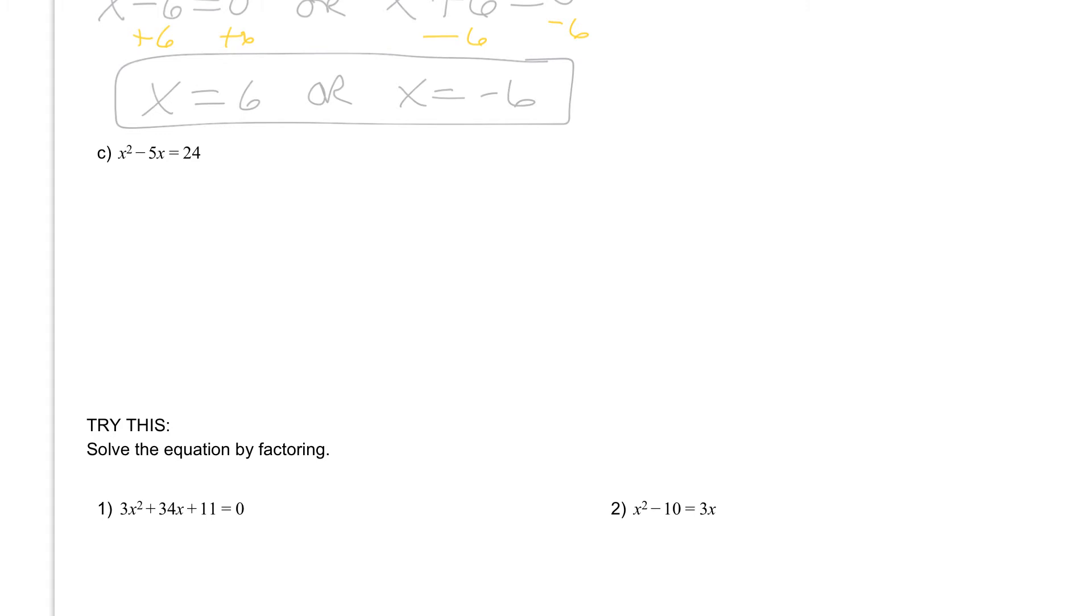To do that, we want to start by subtracting that 24 from both sides and get x² - 5x - 24 = 0. You need to have that zero in order to solve. Now what we want to do is factor this. We're going to set this up, and this is factoring our trinomial using that guess and check method.